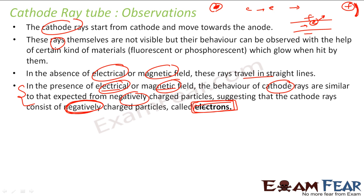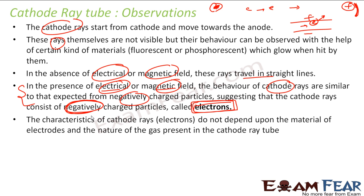He also found that the characteristic of the cathode rays — that is, of the electron — does not depend on the material of the electrode you use. Whether you use germanium, aluminium, or carbon, it doesn't matter. That means the property of the electron is independent of which object you choose.